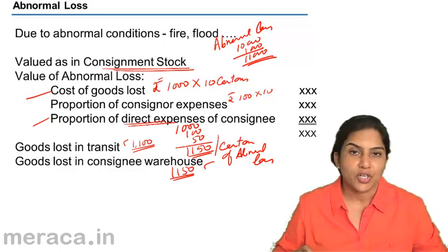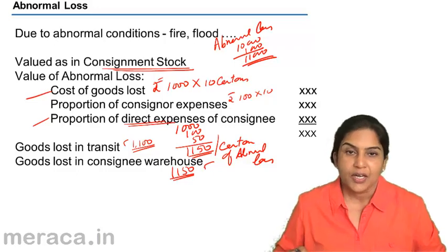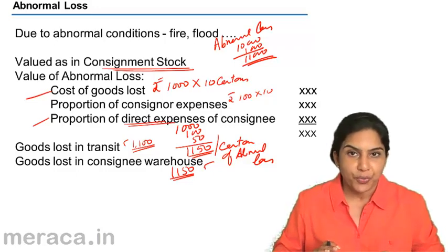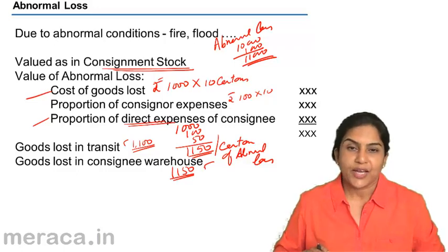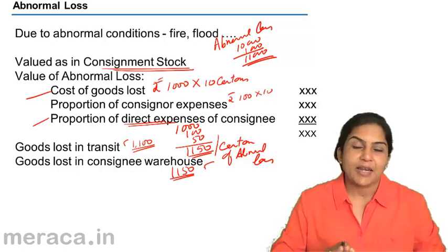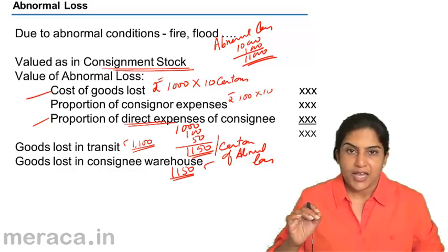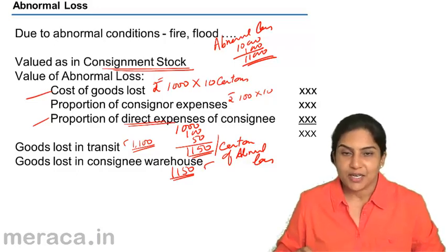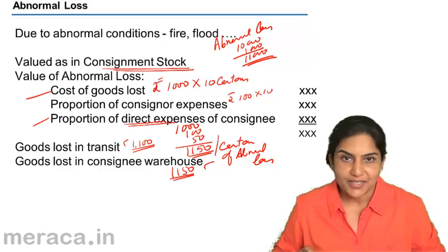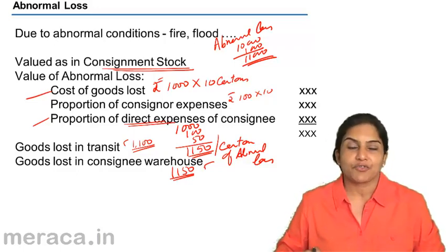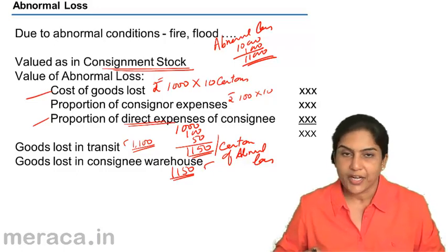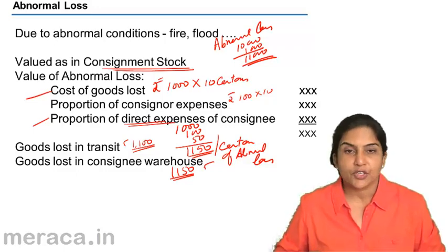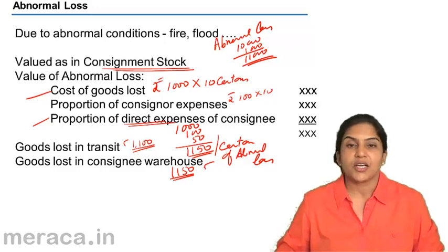Abnormal loss is a loss which occurs due to some abnormal condition. A value is put to it and it is valued in a similar manner as closing stock — the purchase cost, proportion of the consigner's expense, and proportion of direct expenses of the consignee are included. It depends on when the goods are lost — whether in transit or in the consignee's warehouse.